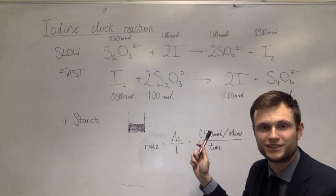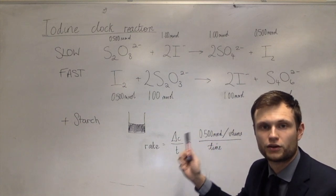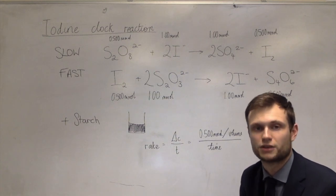So half a millimole of iodine has been made, you divide that by the volume to get concentration, and then concentration divided by the time it took to go black gives you the rate of that reaction.